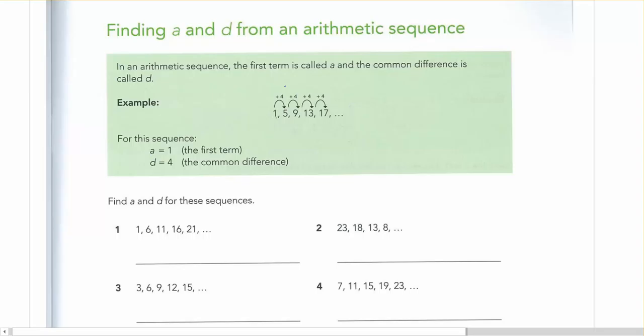So a is always going to be the first term. So in this sequence you see a is the very first term. So in this case, you see 1 is the first term. So that means a is equal to 1.